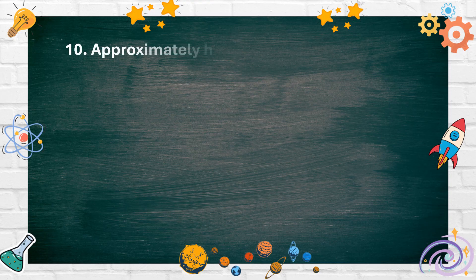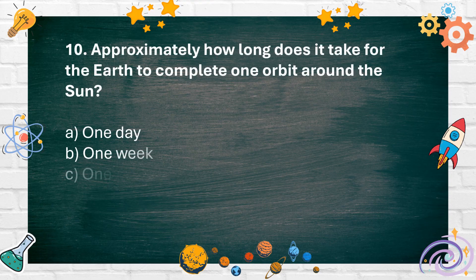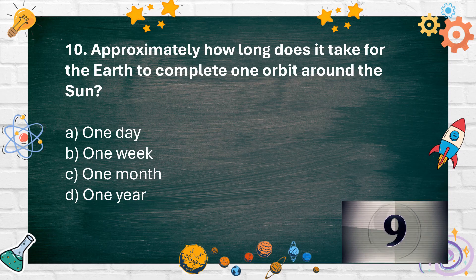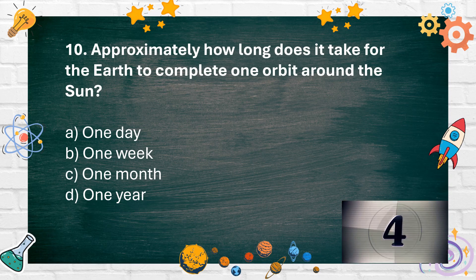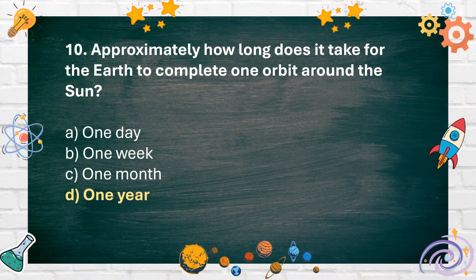Number 10. Approximately how long does it take for the Earth to complete one orbit around the Sun? A. One day, B. One week, C. One month, D. One year. The answer is D. One year.